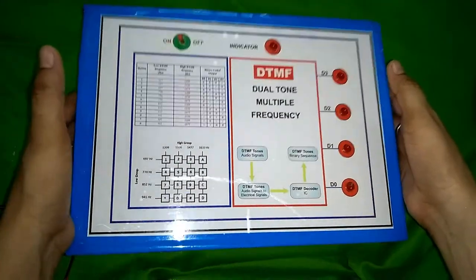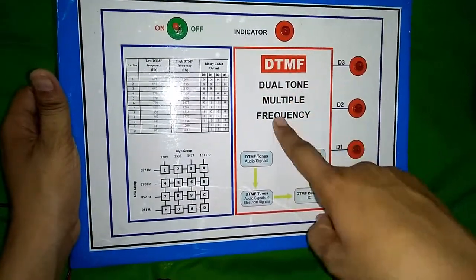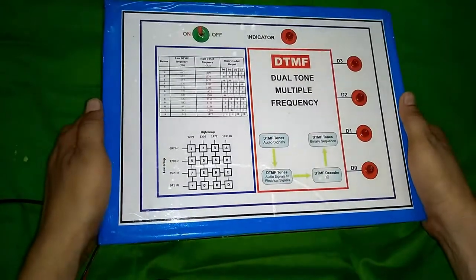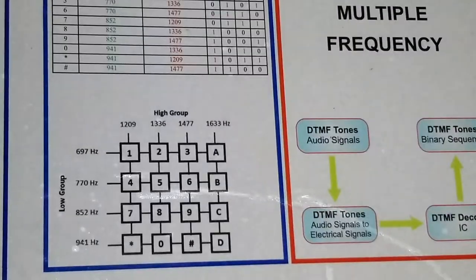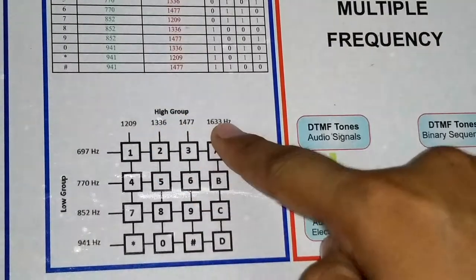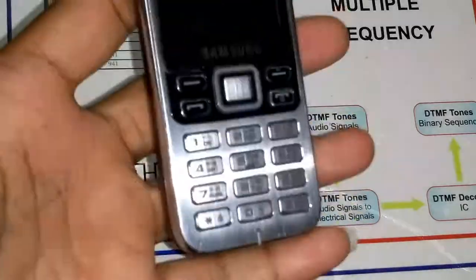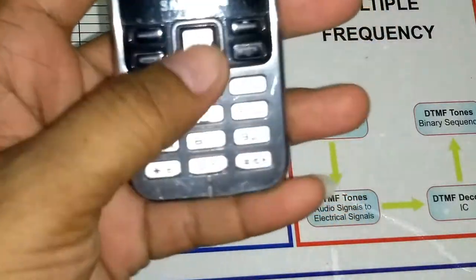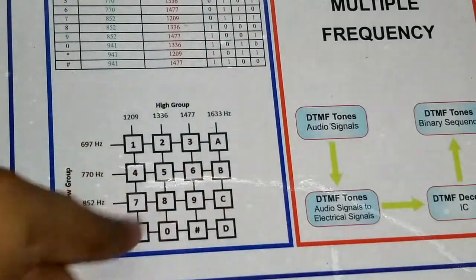This is DTMF — Dual Tone Multiple Frequency. I will explain it in more depth. Here you can see the high group frequency and low group frequency. These are the rows and these are the columns.